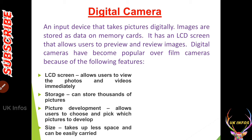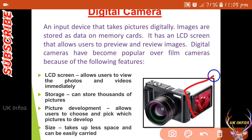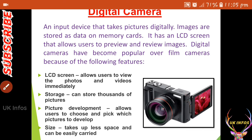Next is the digital camera — an input device that takes pictures digitally. Images are stored as data on memory cards. We can edit, modify, or delete them. It has an LCD screen that allows users to preview and review images. Digital cameras have become popular over film cameras because the LCD screen allows users to view photos and videos immediately. Storage can hold thousands of pictures. It allows users to choose which pictures to develop. It also takes up less space and can be easily carried.